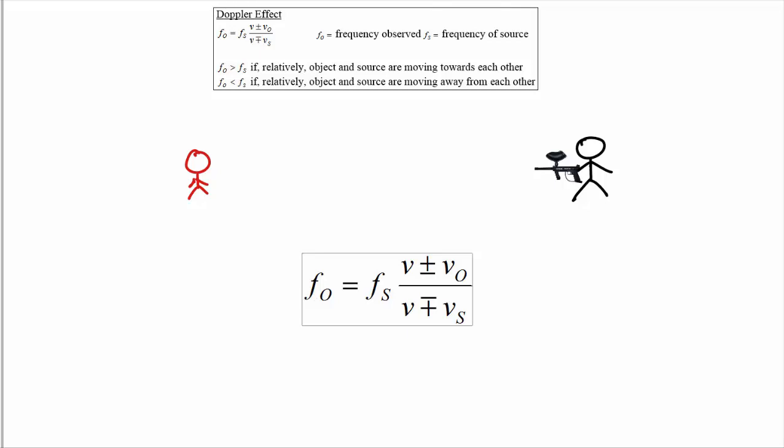Let's talk about the Doppler effect. The Doppler effect allows us to explain why the observed frequency of either light or sound may appear different than the emitted frequency by some source.